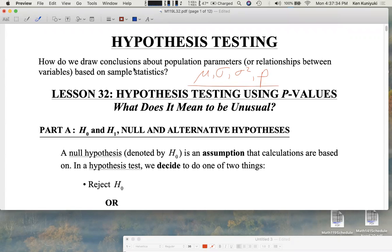How do we draw conclusions about population parameters such as these? Remember them? A population mean, a population standard deviation, a population variance, or a population probability or proportion. Later on, we'll also do tests regarding relationships between variables. We're going to draw conclusions based on sample statistics that we gather from sample data.